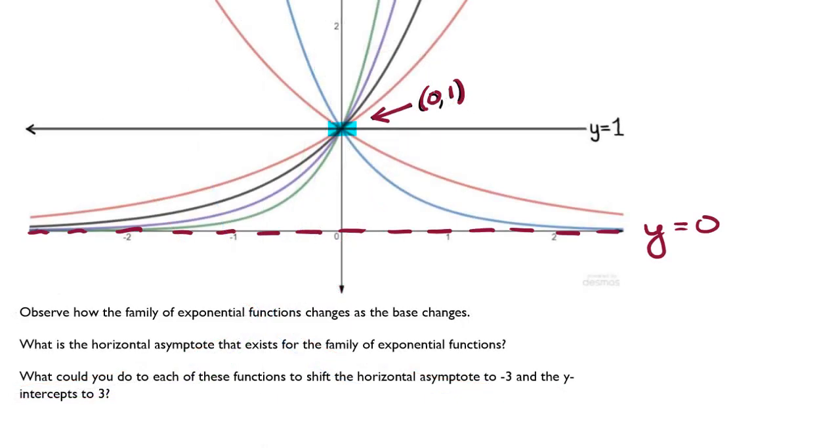Let's see if we can figure out what we would need to do to any one of the functions listed above to shift the horizontal asymptote to negative 3. Well, remember that all my functions had the form y equals b to the x. If we wanted to shift any one of these functions down 3, we would simply subtract 3 from what was given. This would give us a new horizontal asymptote at y equals negative 3.